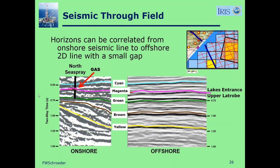I talk about the seismic horizons. I always want to have seismic going through the onshore field if there are known hydrocarbons. This is onshore data with poor data quality. I've marked my major horizons in cyan, magenta, green, brown, and yellow. There's a little gap from the onshore line to the offshore 2D line — my prospect is further offshore, so I'm not going right through the prospect yet. But the offshore seismic data quality is much better, and I can do a fairly confident correlation from the onshore seismic, which has wells to control and age-date my horizons correctly, into the offshore.